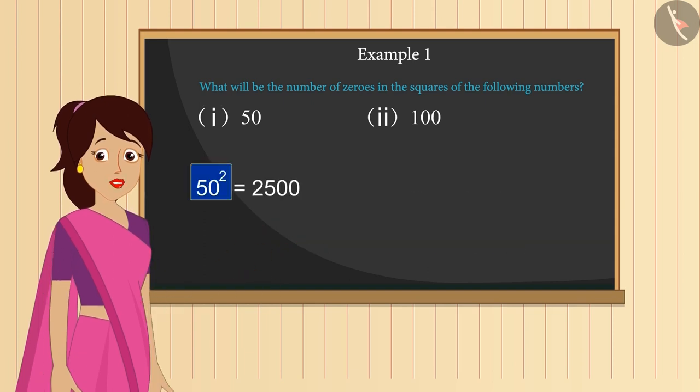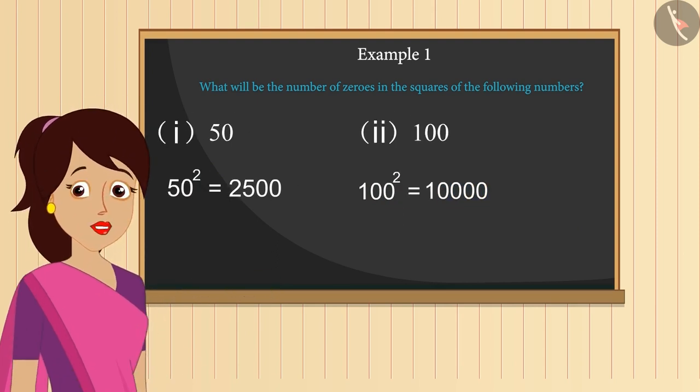Therefore, there will be two zeros in the square of 50 and four zeros in the square of 100. Isn't that easy?